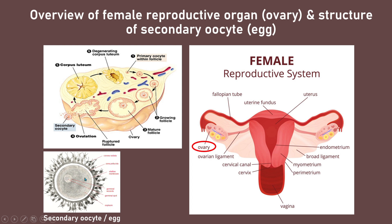The secondary oocyte or egg is a female gamete which carries the mother's genetic material. It is developed inside a follicle in the ovary, where it matures from a primary oocyte into a secondary oocyte. At ovulation, the secondary oocyte is released from the ovary into the fallopian tube.